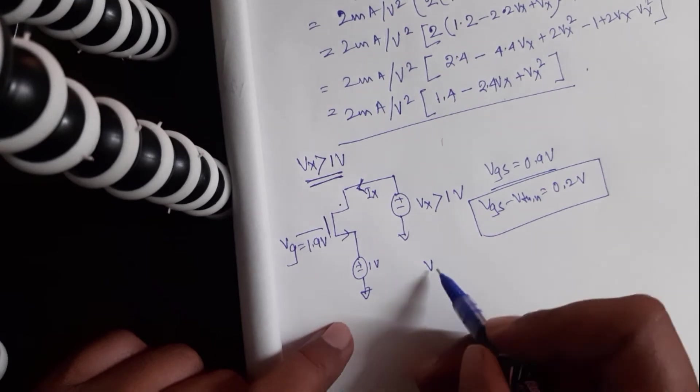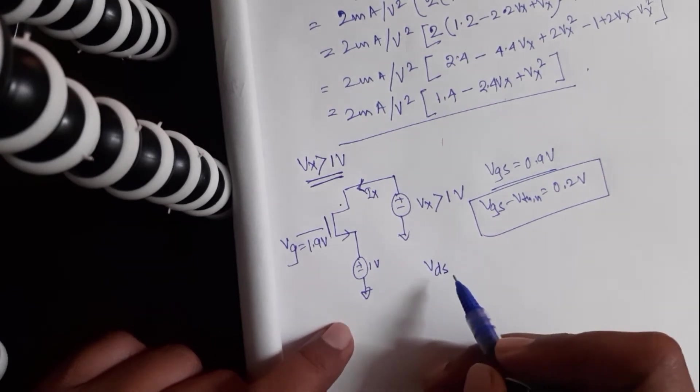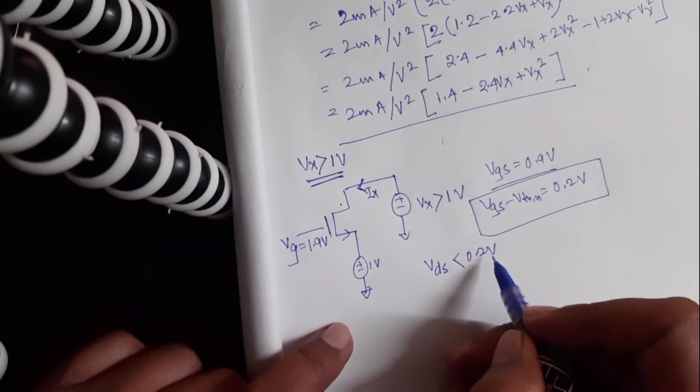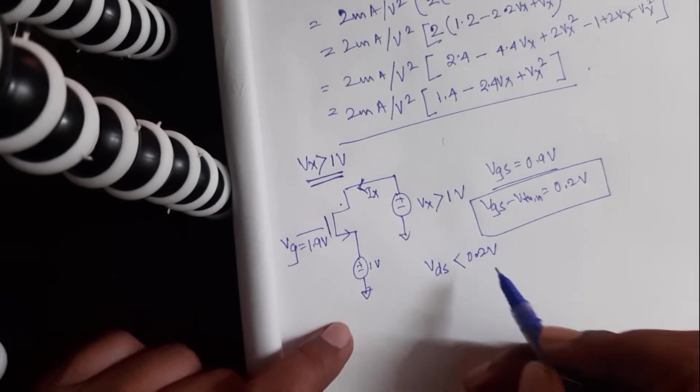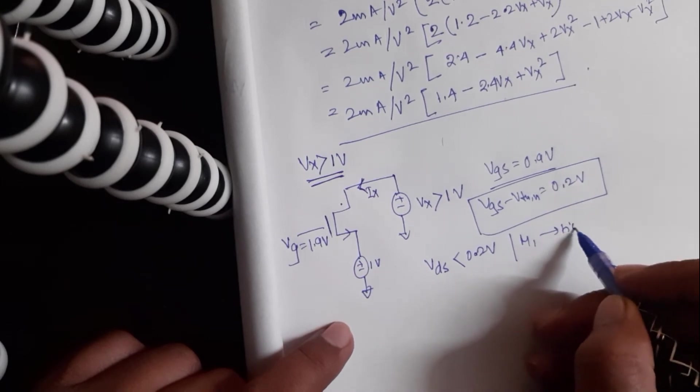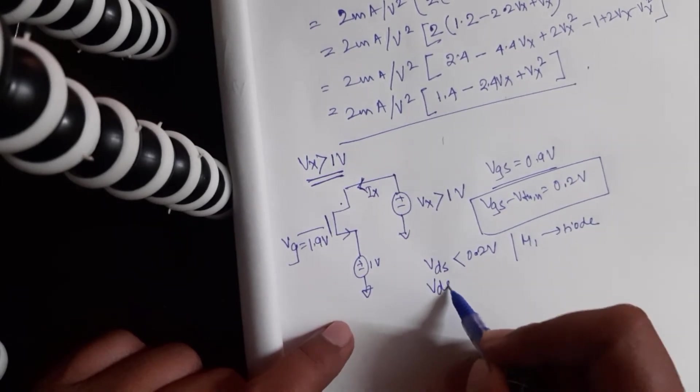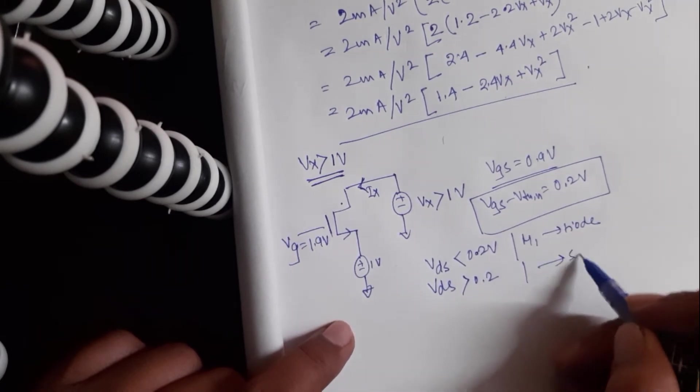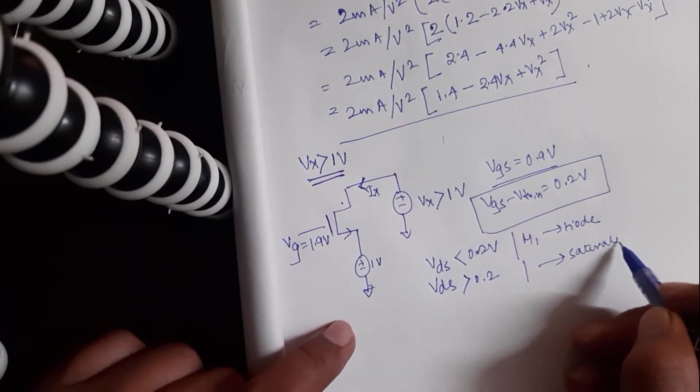So when Vds is less than 0.2 volts, the transistor is in triode. When Vds is greater than 0.2 volts, the transistor is in saturation.